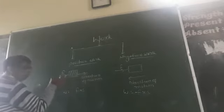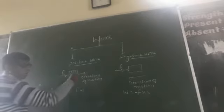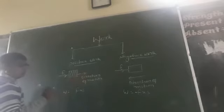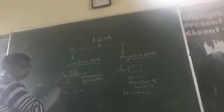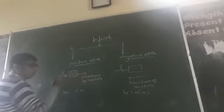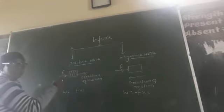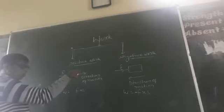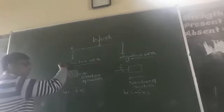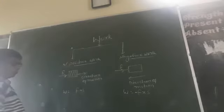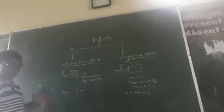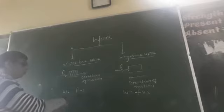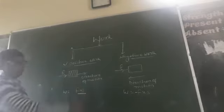Force is applied, suppose that it is a forward direction, and this arrow also indicates that the object is also moving in the same direction. This means displacement takes place in the direction of force. So this work is known as positive work, and it is written here: W equals F into S. Positive work.